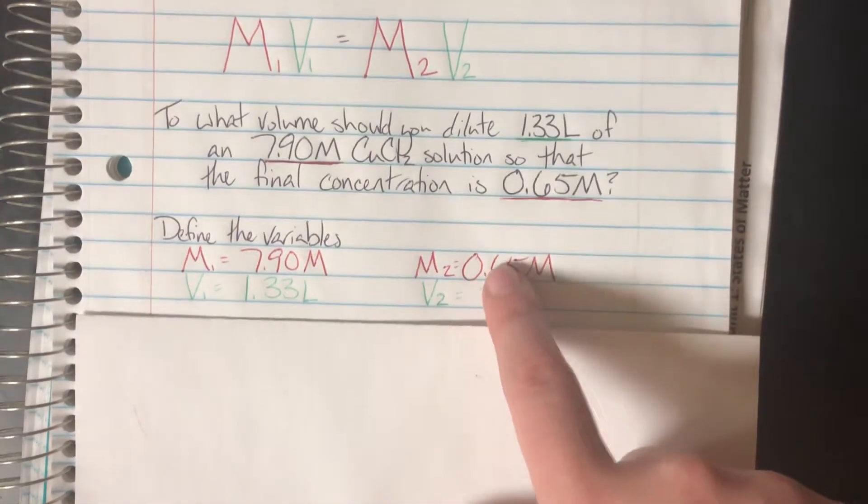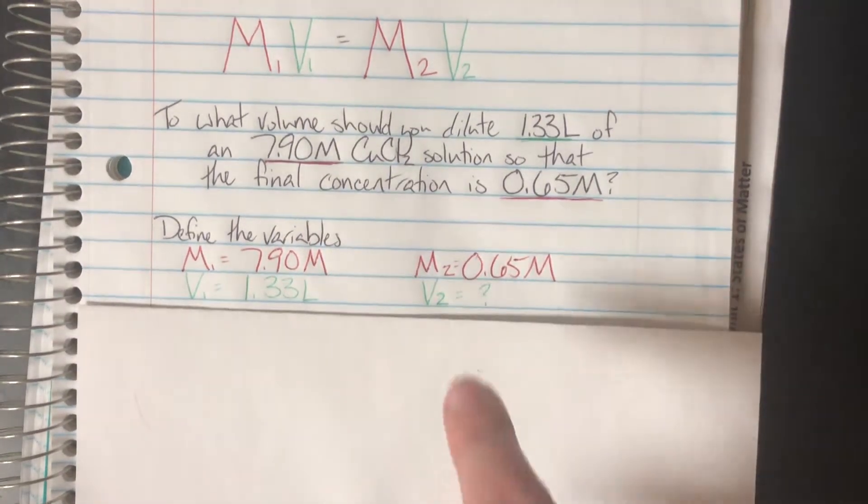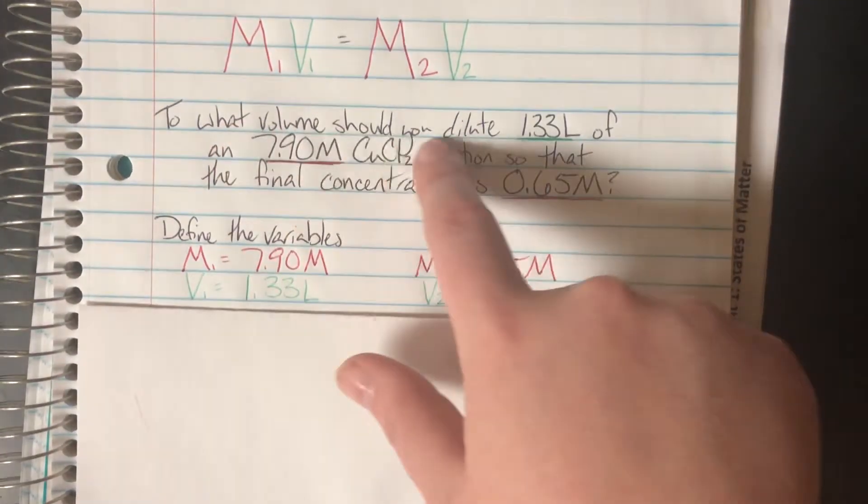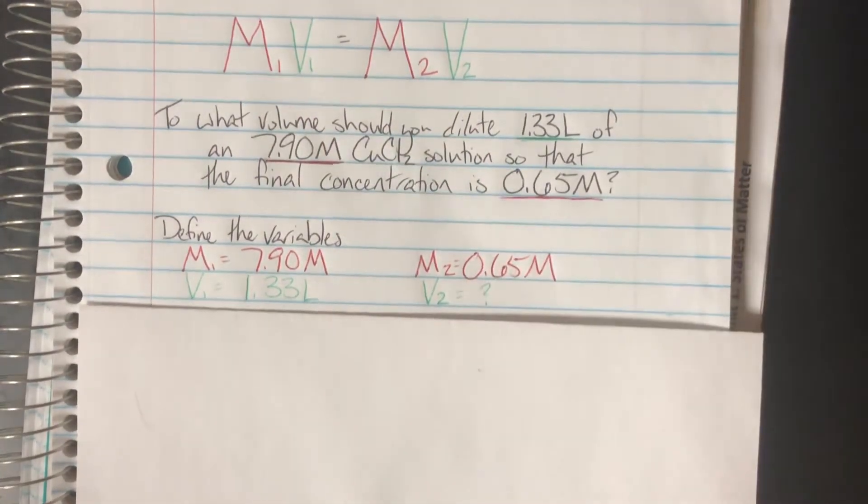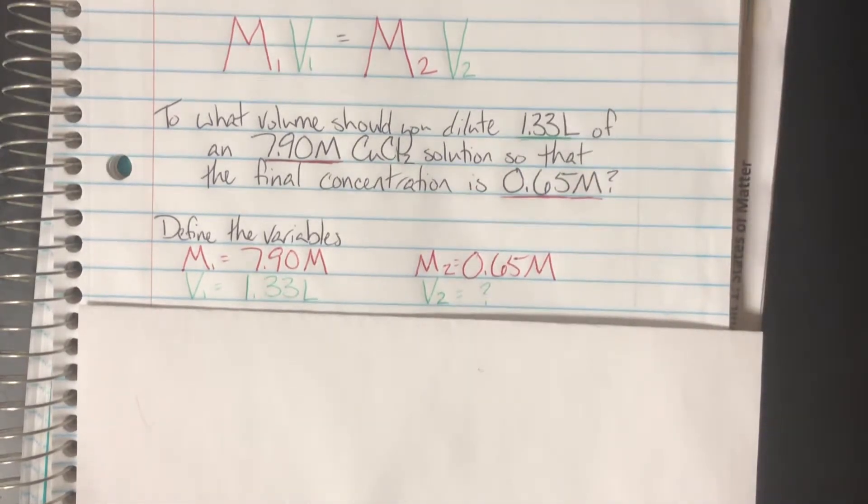Again, final concentration means that this is going to be my M2, which means that my other red value must be my M1. And then I know that my what volume should I dilute to? That has to be my V2, which means I do not know it. So that means my 1.33 must be my V1.